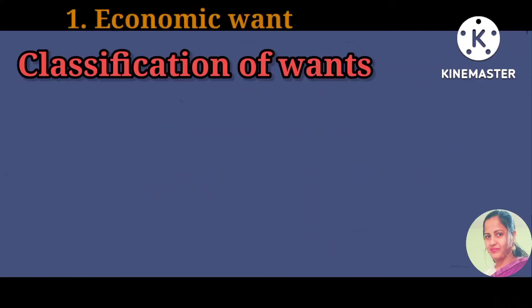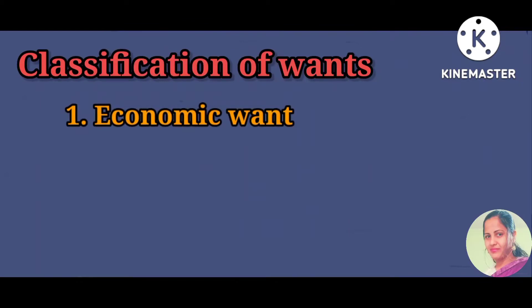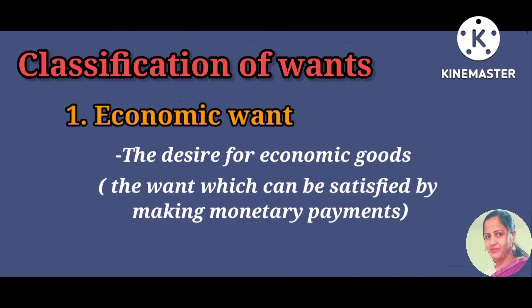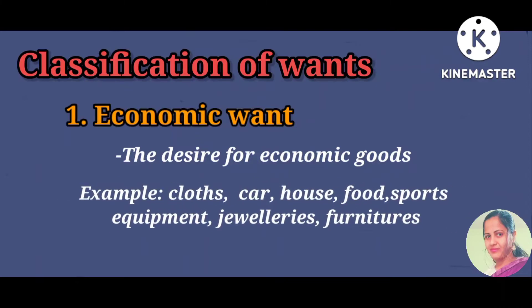First, economic wants. The desire for economic goods — that is, goods scarce in nature, meaning material goods and services — is called an economic want. It is an economic good because it commands a price in the market, or you can say it has exchange value. It costs money to satisfy them. For example, clothing, cars, houses, food, sports equipment, haircuts, jewelry, and furniture — to satisfy these wants a consumer has to spend money.